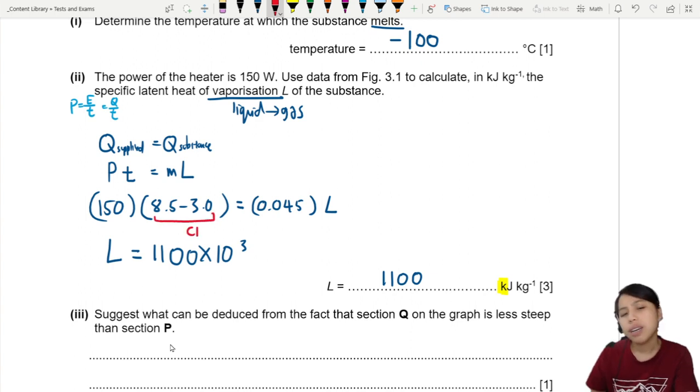The first mark comes from the time that you read from the graph, 5.5 minutes. This is C1. Unfortunately, this mark is a bit strict. So you gotta read 5.5. If it's a little bit more, a little bit less, then wrong. Next, I'm looking for you knowing how to equate energy supplied versus the energy used to change the state. So this is C1 for your equating of these two energies.